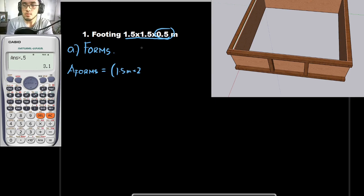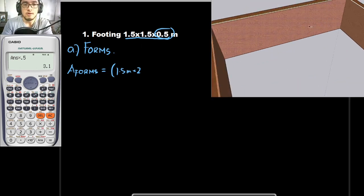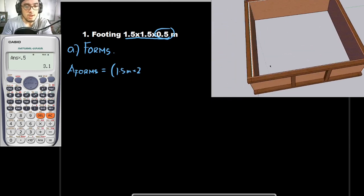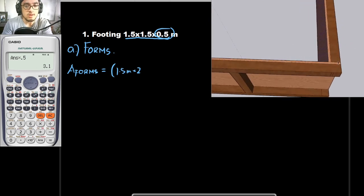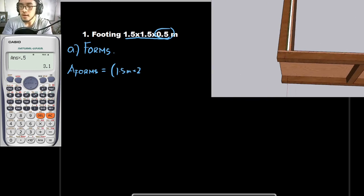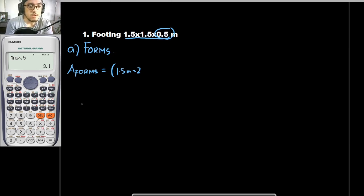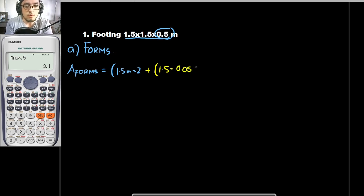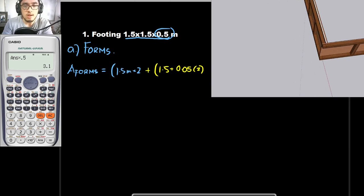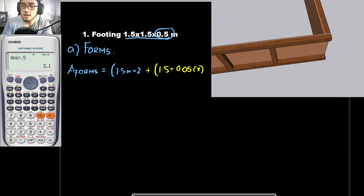So 1.5 meters times 2 — this covers two sides. And for the other two sides, you should increase them by 2 inches since we are to use 2 inches for our bracing — 2 inches on each side. So I would be adding plus 1.5 plus 2 inches, and 2 inches in millimeters would be 0.05. I would be multiplying it by 2 since it must go from end to end, covering this part as well as the other part. That's why I multiplied our additional length by 2.